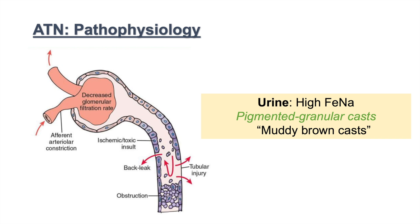This is how we can distinguish ATN from acute interstitial nephritis or glomerular nephritis. ATN involves ischemic or toxic injury to the renal tubule itself, as opposed to glomerular nephritis, which has damage in the glomerulus, or acute interstitial nephritis, which involves the interstitium of the kidney.